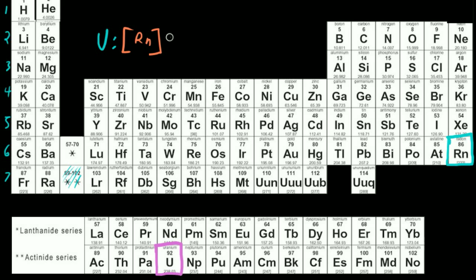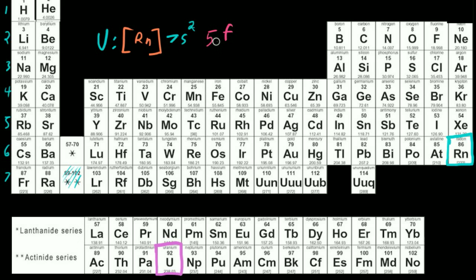We're going to say that we have 7S electrons — we're going to have two of them, so 7S2. And then what orbital are we in now? We're in our F orbitals. And just like when we were in the D block, we backfilled one period number — now that we're in the F block, we're actually going to backfill two period numbers. So this is going to be 5F, not 7F. We backfill these F orbitals to two levels instead of just one. So this is going to be our 5F level, and then our 4F level.